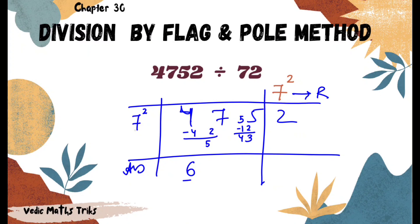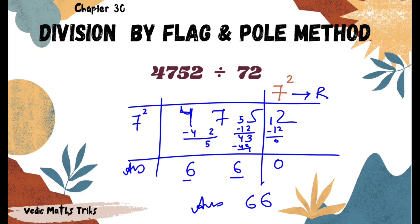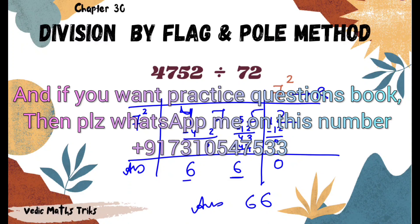We divide 43 by 7: it goes 6 times (7×6=42), giving remainder 1. We write 1 alongside the next digit. We multiply 6 by the flag 2: 6×2=12, and subtract 12, giving 0 as the remainder. The final answer is 66. Please practice these tricks thoroughly for day-to-day calculations. If you want a practice question book, WhatsApp me at the number given in the description below. Thanks for watching.